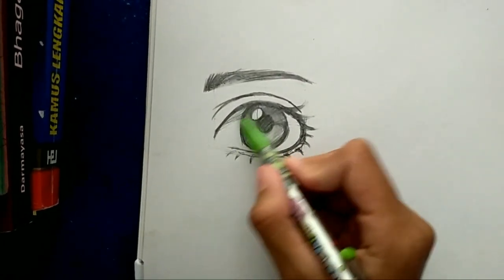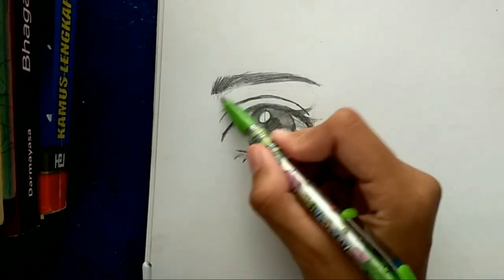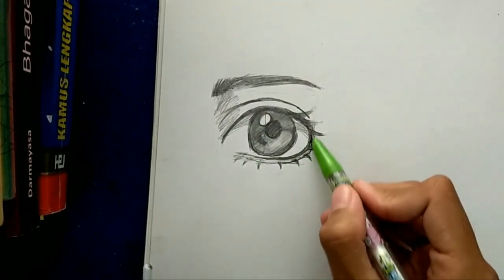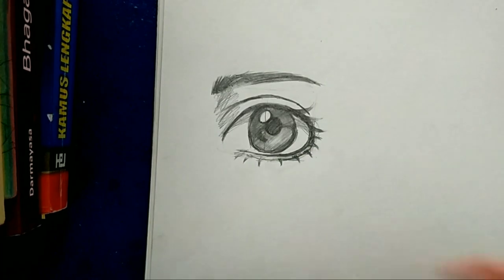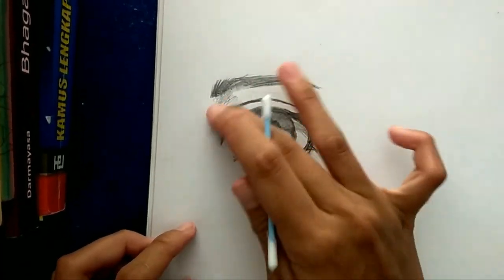Now you can add some shades into these parts to make it look more realistic. And then you can smooth it with your cotton bud like this. Or you can use your finger like this.